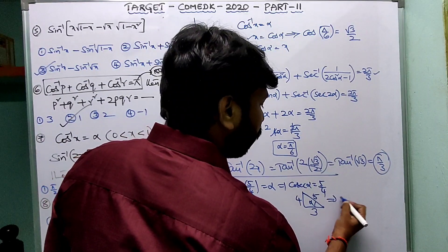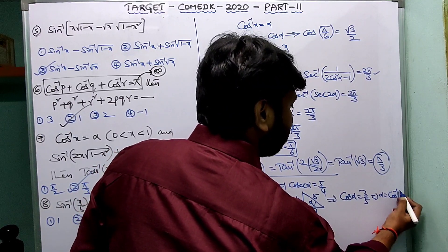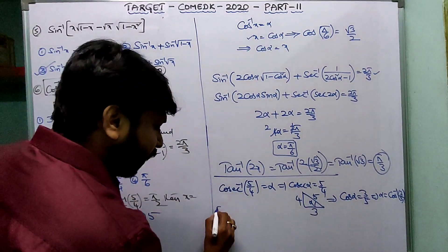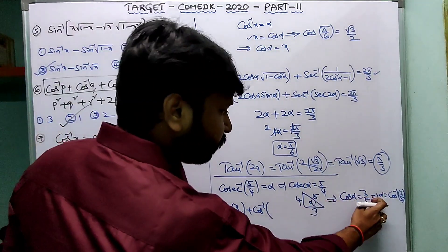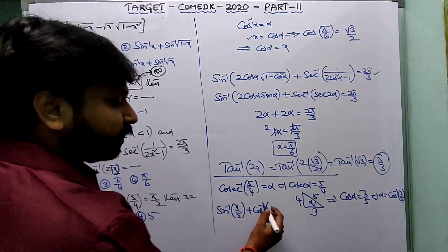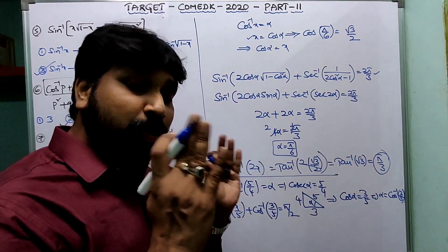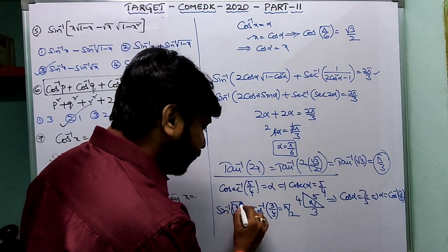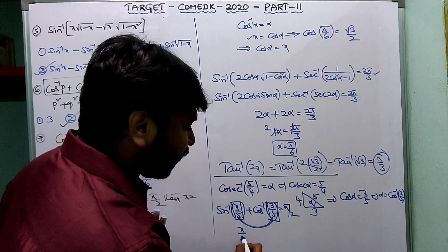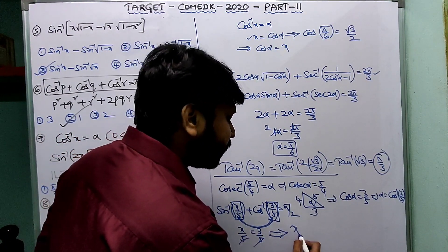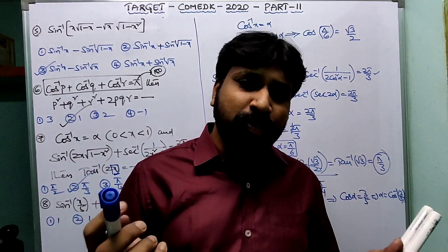By the 3-4-5 Pythagorean triplet, adjacent = 3, so cosα = 3/5, meaning α = cos⁻¹(3/5). Therefore sin⁻¹(x/5) + cos⁻¹(3/5) = π/2. Since sin⁻¹θ + cos⁻¹θ = π/2 requires the same angle, x/5 = 3/5, so x = 3. The third option is correct.